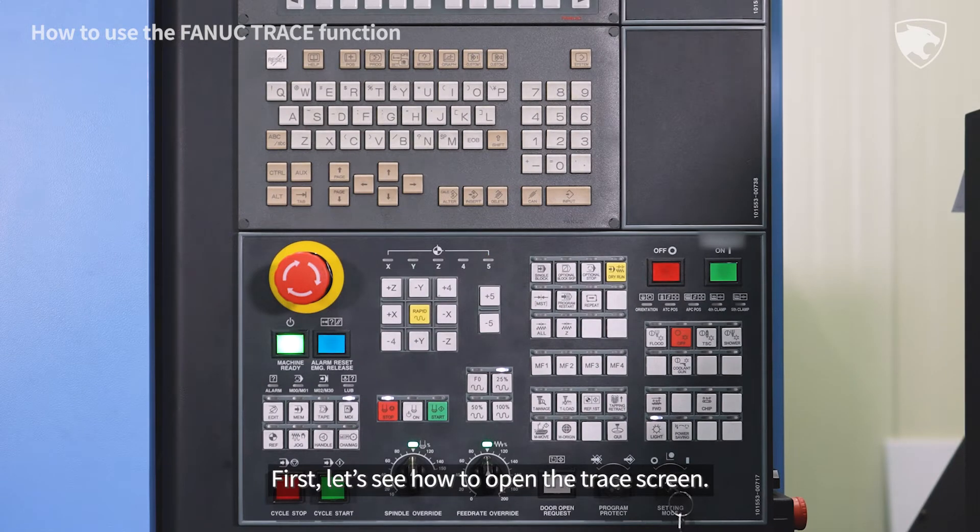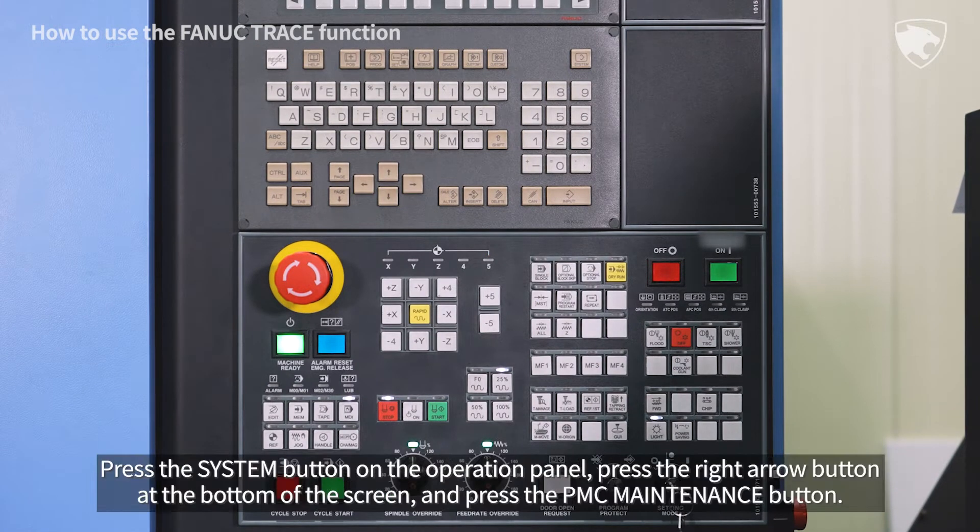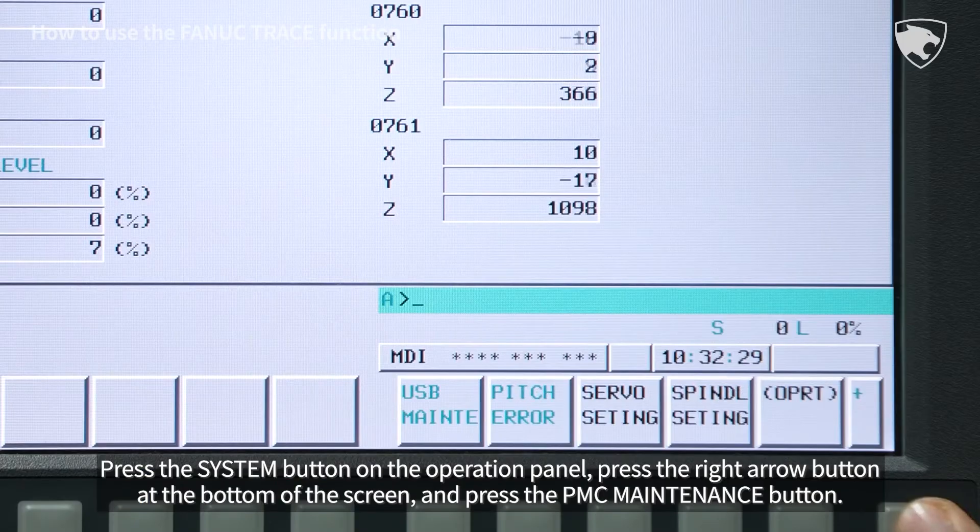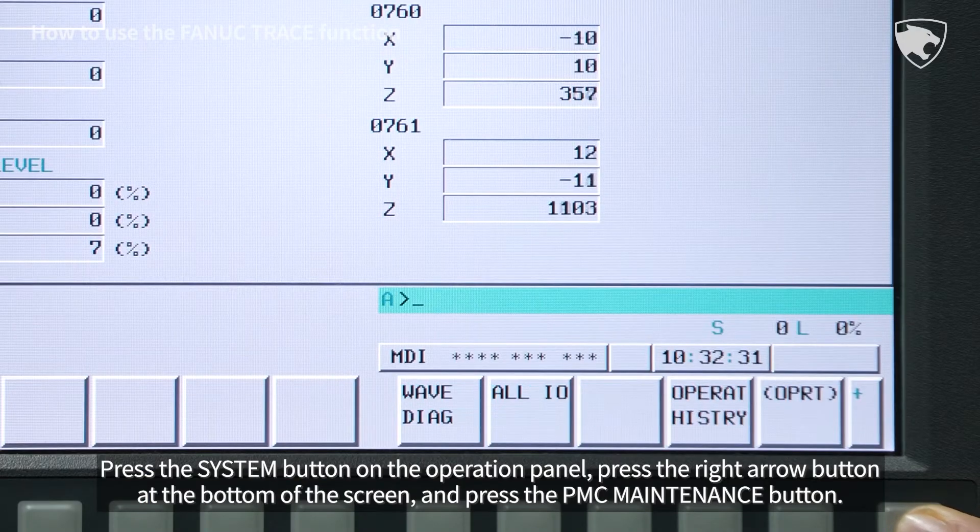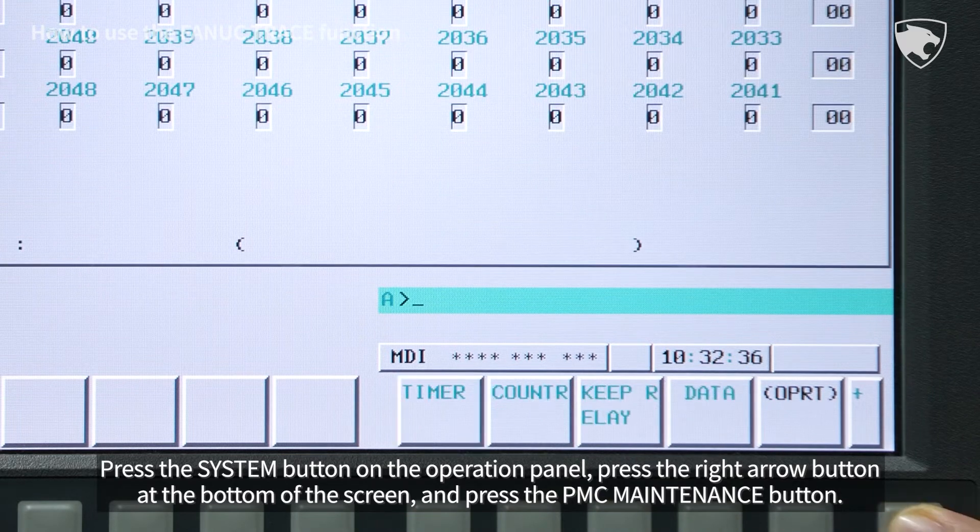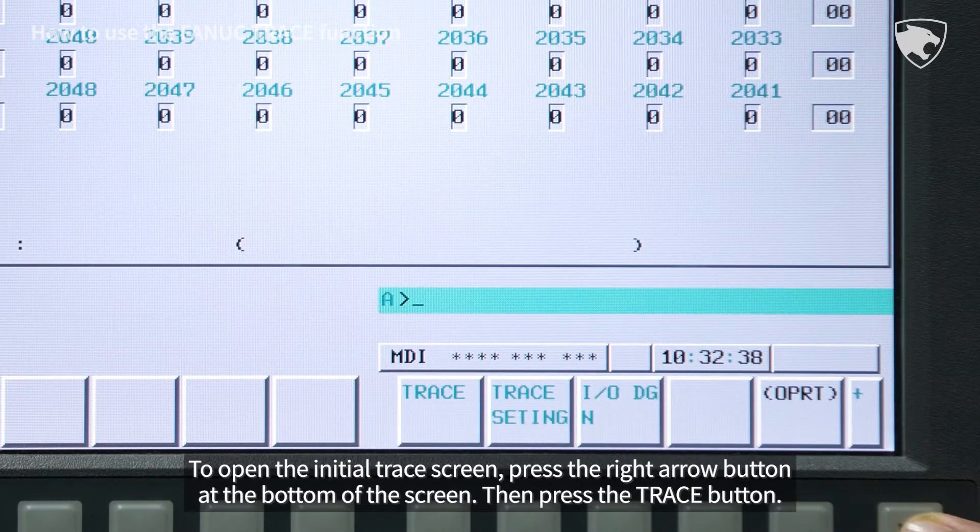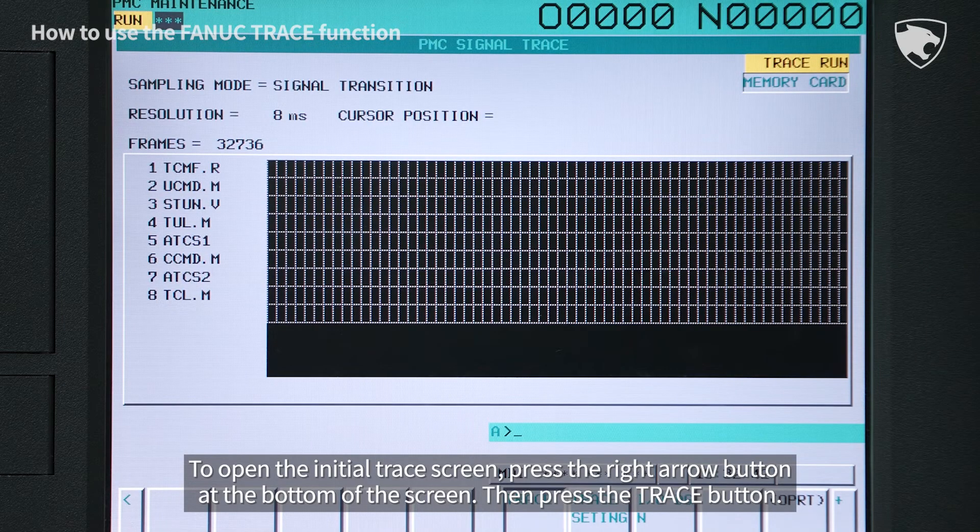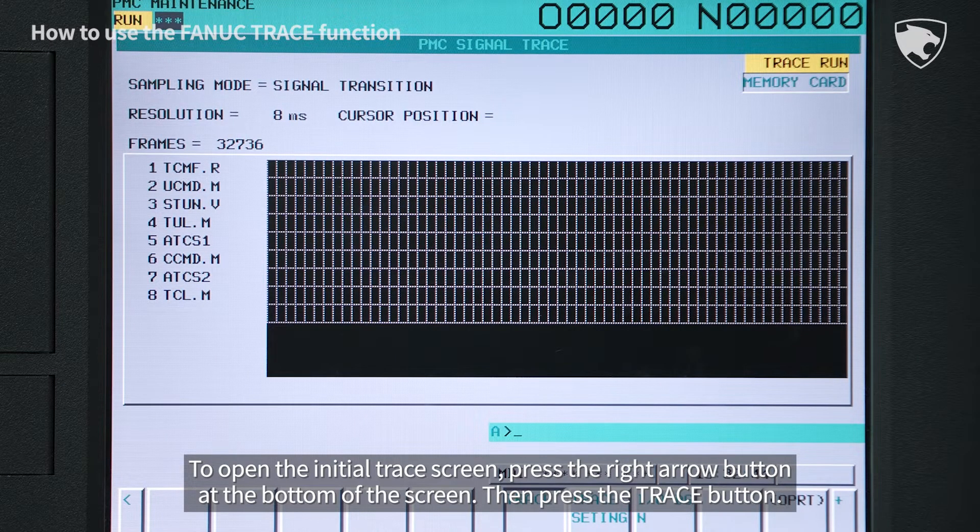First let's see how to open the trace screen. Press the system button on the operation panel, press the right arrow button at the bottom of the screen and press the PMC maintenance button. To open the initial trace screen press the right arrow button at the bottom of the screen then press the trace button.